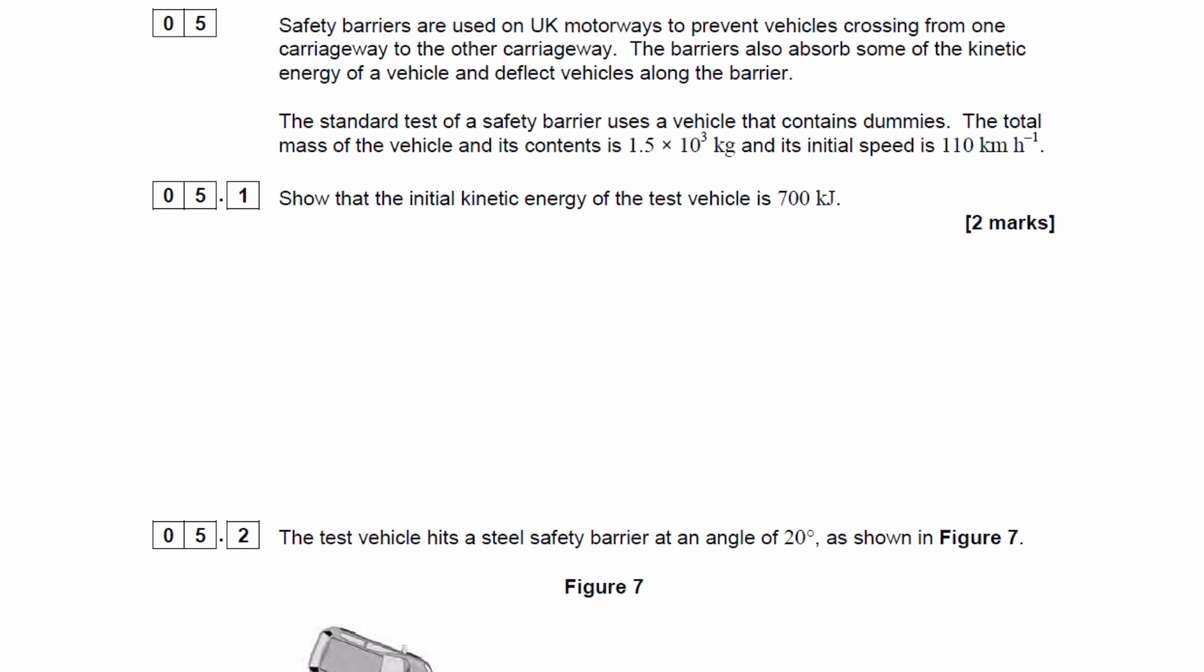The standard test of a safety barrier uses a vehicle that contains dummies. The total mass of the vehicle and its contents is this, and the initial speed is this. We're trying to work out the initial kinetic energy and show that it's about 700 kilojoules.